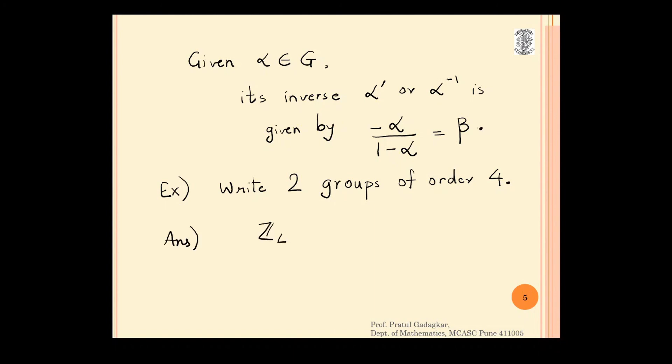The first and the simplest group is Z4 which contains 0 bar, 1 bar, 2 bar and 3 bar. This is a group with respect to the operation addition modulo 4. This is the first simple group of order 4 which is a very simple example.